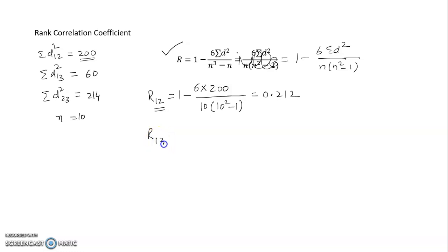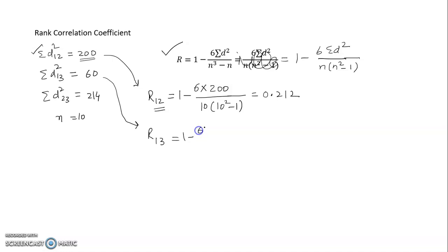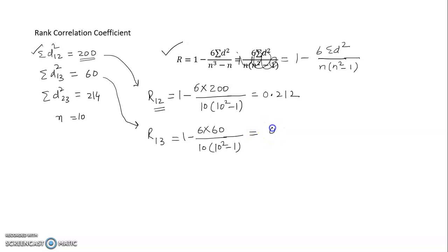For the first and third judge: r13 = 1 − (6 × 60) / (10 × (100−1)) = 1 − 360/990 ≈ 0.636. This is a moderate to strong positive correlation.